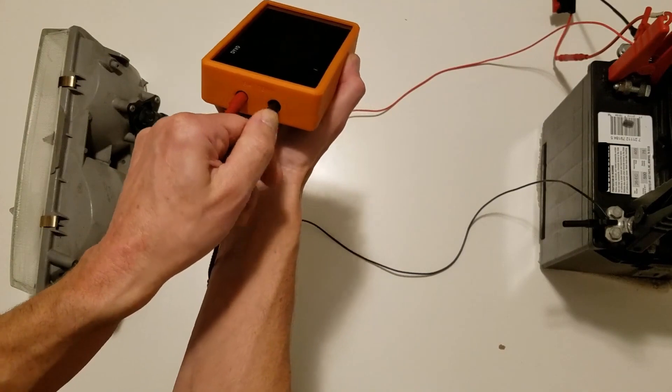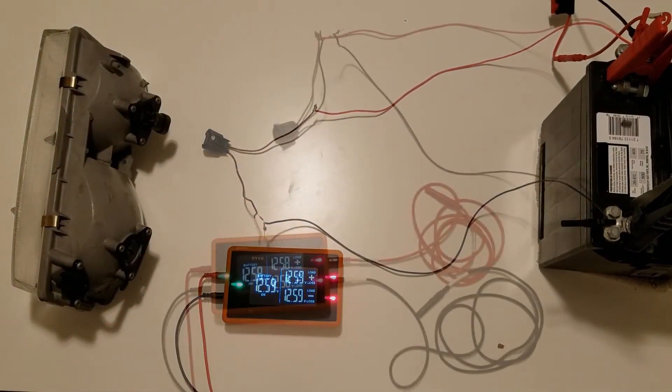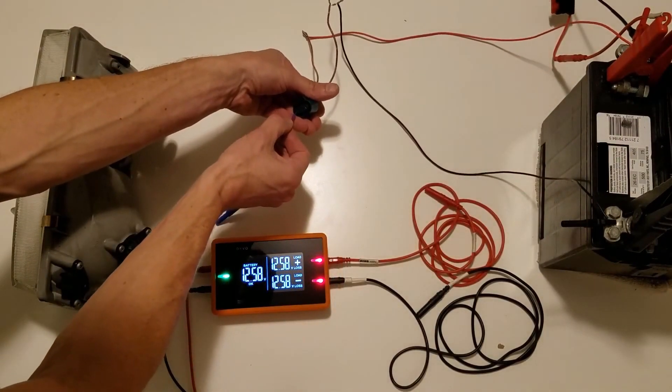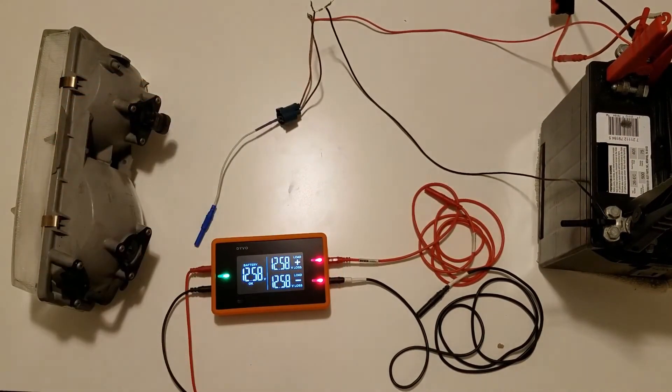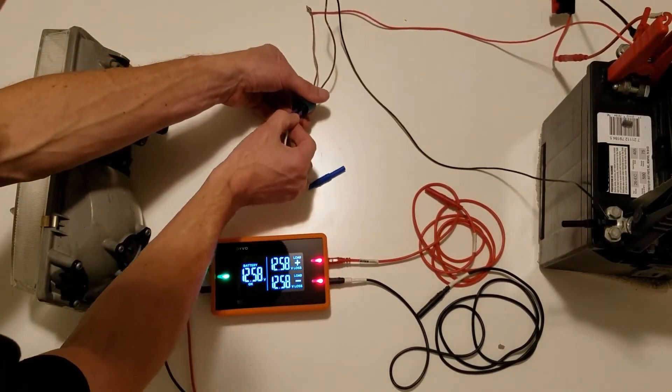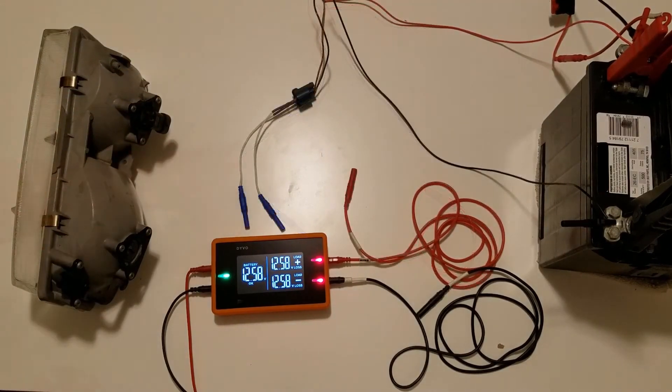I'm going to use the DEVO forward probes and connect to the front of the connector. These make it really nice and easy to access terminals and circuits without damaging any of the wires or terminals. Now I'm going to connect the test leads on the circuit side to the forward probes.